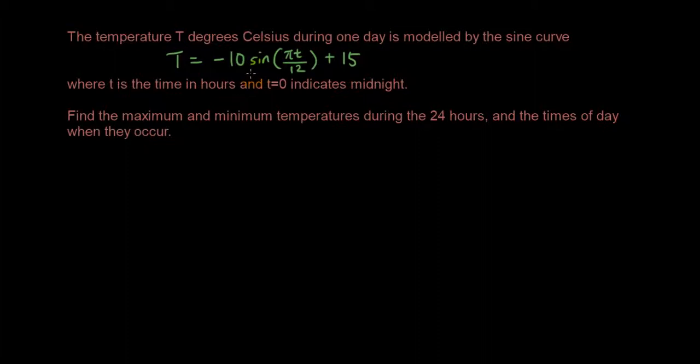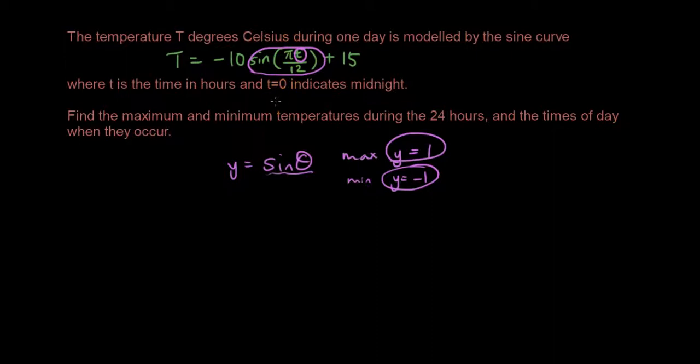So the way you work it out is, firstly you notice that here is a sine function. Now regardless of what is inside the bracket, regardless of what's the input, if you have a sine curve y equals sine θ, the maximum y value is going to be 1, and the minimum y value is going to be negative 1 for a sine curve. So for this section here, if we get rid of everything else, the maximum value is going to be 1 and the minimum value is going to be negative 1.